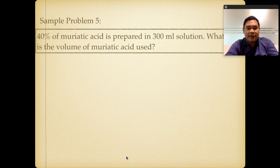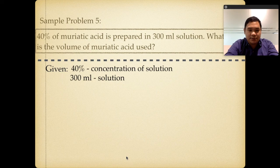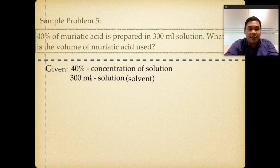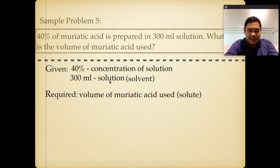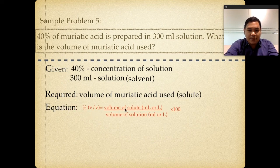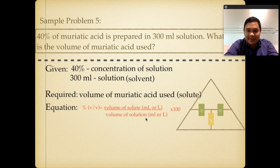Sample problem number 5: 40% muriatic acid is prepared in a 300 mL solution. What is the volume of muriatic acid used? The given is 40% concentration and 300 mL solution — note that 300 mL is the solution, not the solvent. The required is the volume of muriatic acid, which is the solute. The equation is percent V/V equals volume of solute divided by volume of solution, times 100.